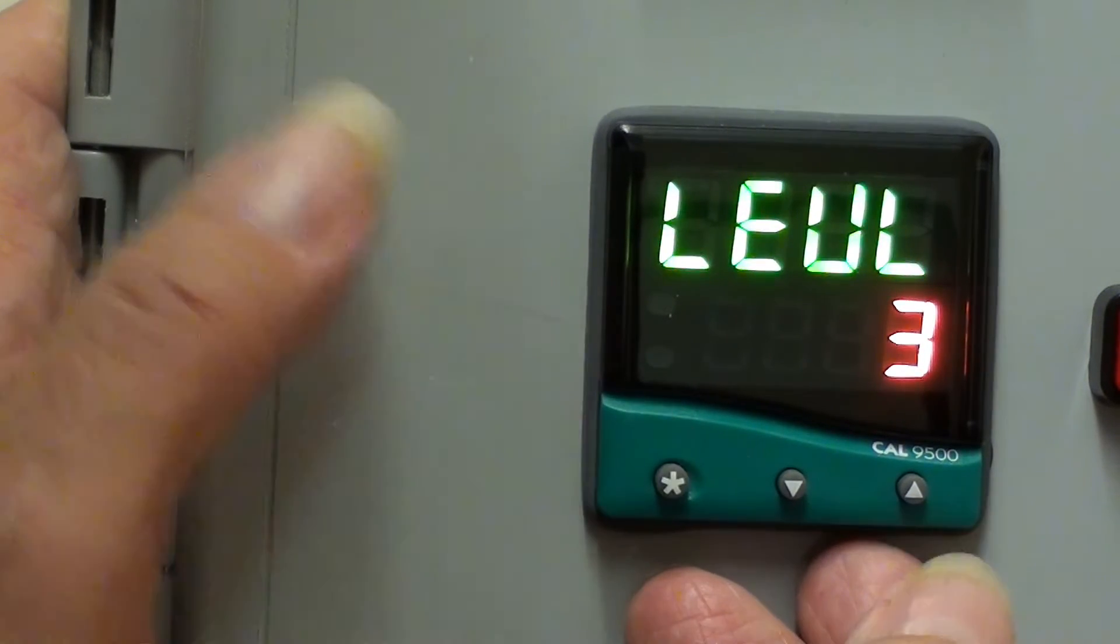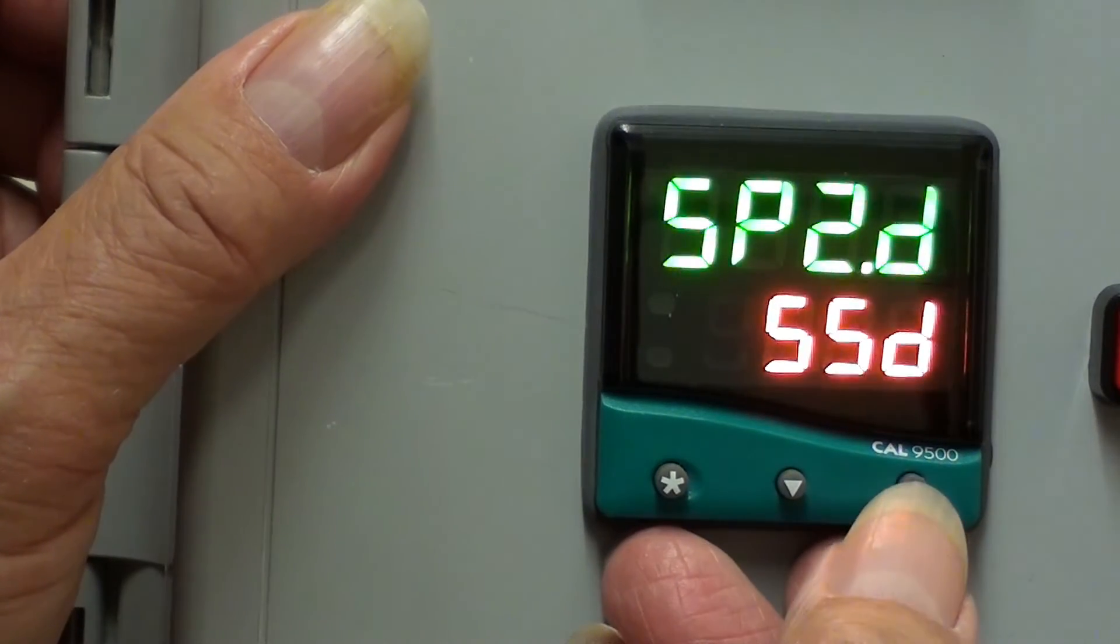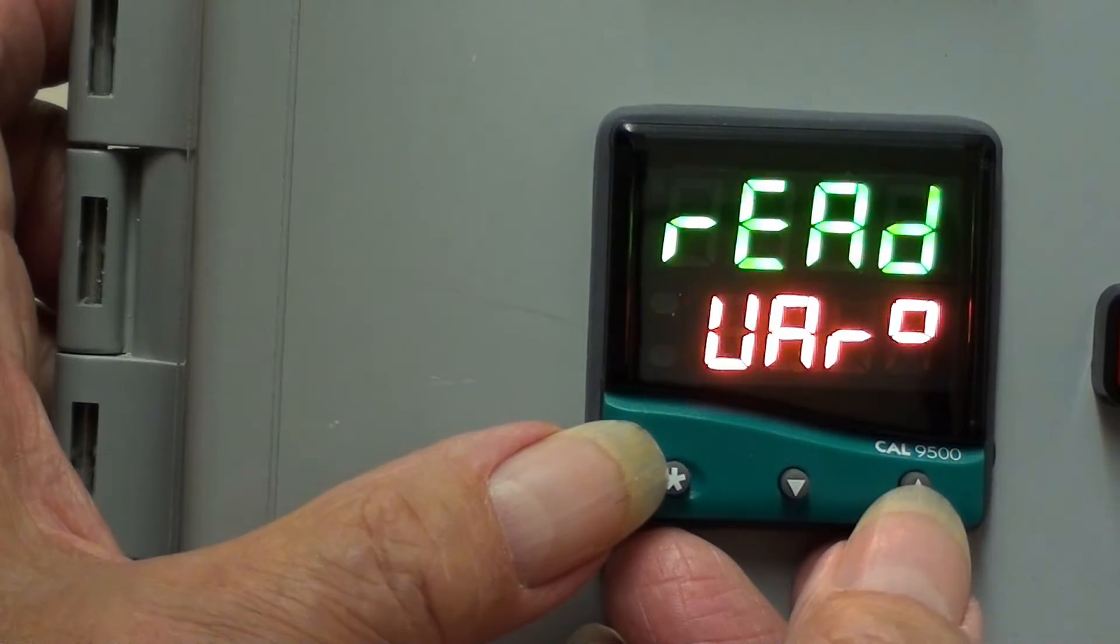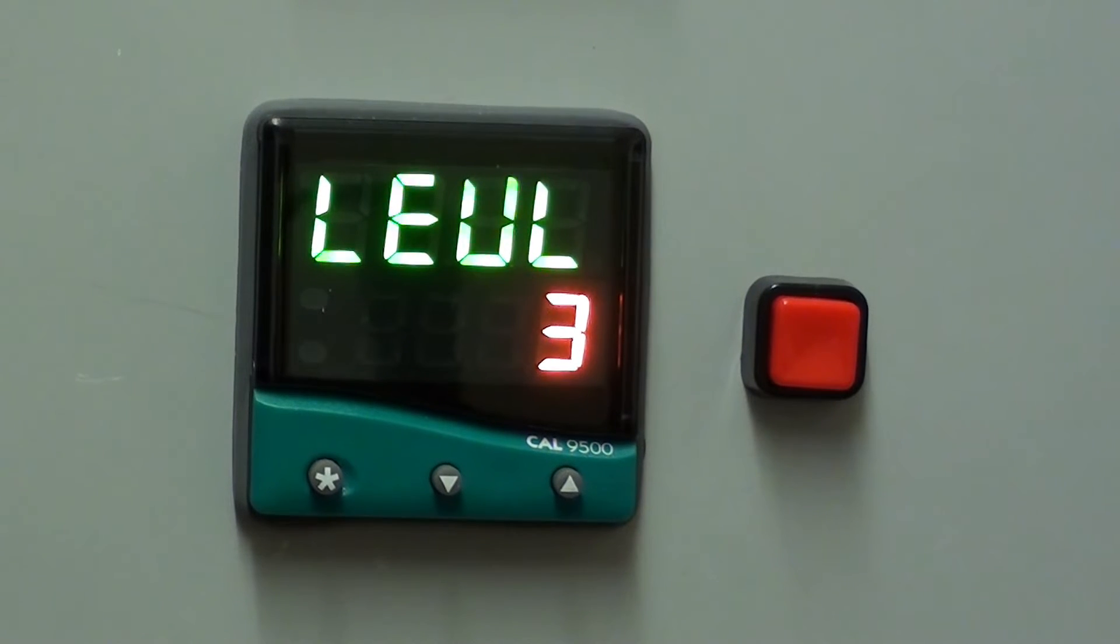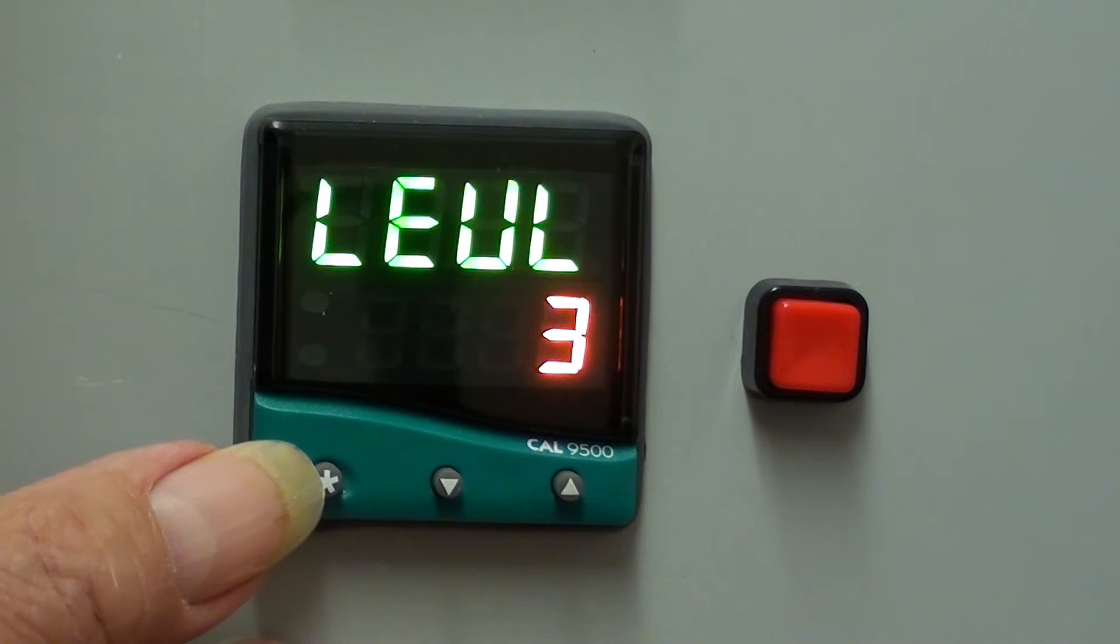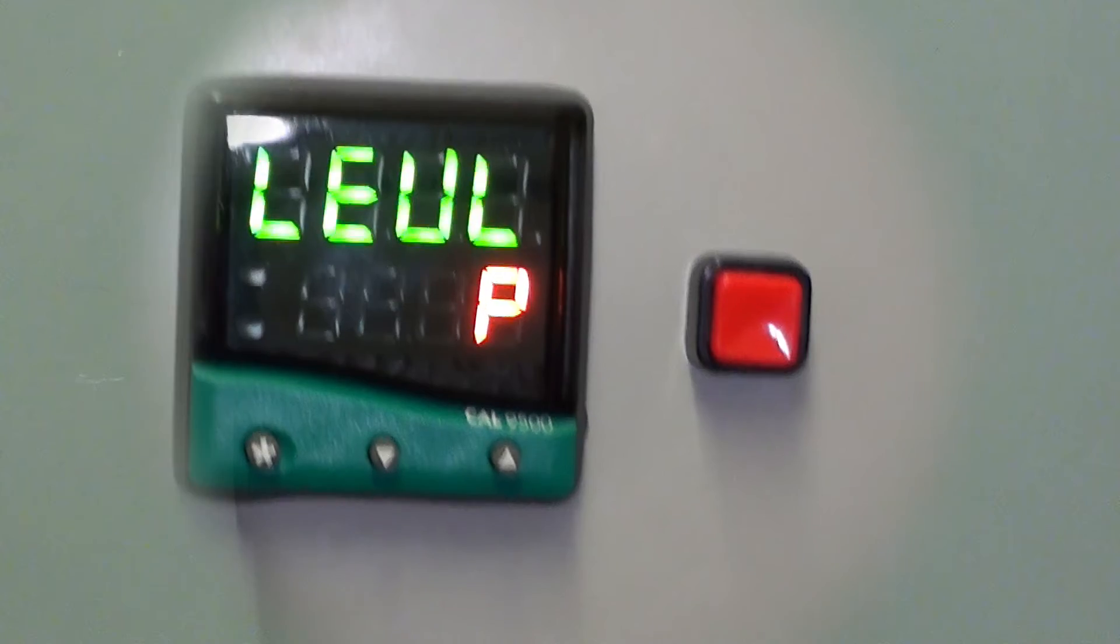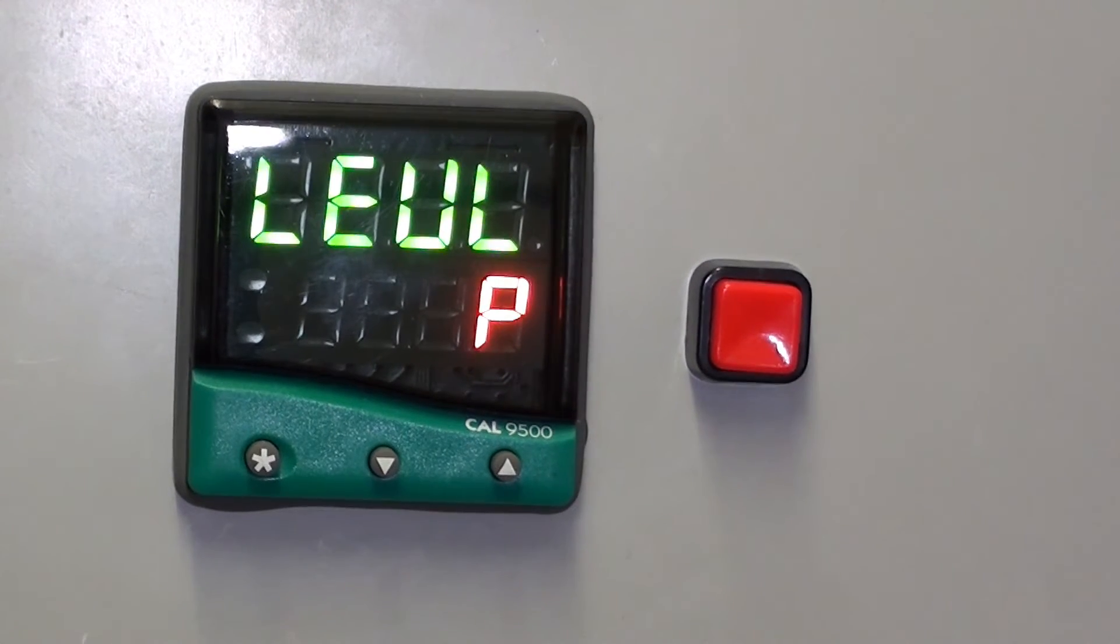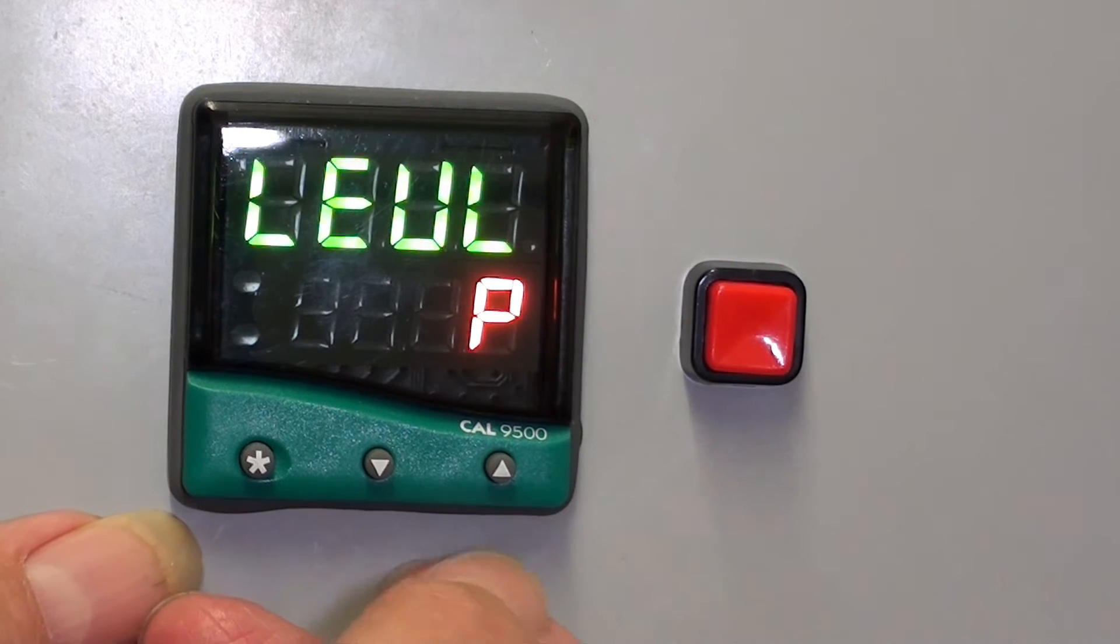Level 3. At level 3, we can select the type of outputs. Relay, SSD and so on. If we want to create a program or a profile, we have to go to level P. So, hold the star, the down arrow, P. In level P, we can create up to 31 programs and a total of up to 126 segments.